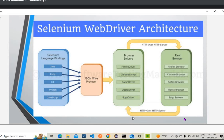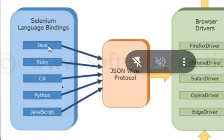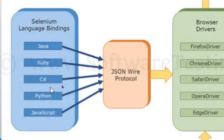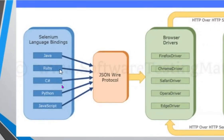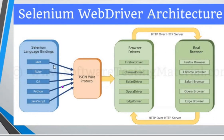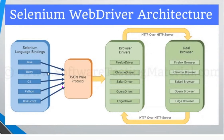Now let me explain how the Selenium WebDriver architecture works. We have client libraries here — these are the libraries for specific languages: Java, Ruby, Python, JavaScript, and C#. These are the languages supported by Selenium. Using these client libraries, we generate the automation test scripts.